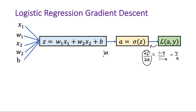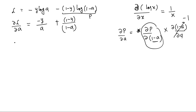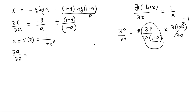Next, going backwards, we calculate del a over del z. We know that a is sigmoid of z, which expands to 1 over (1 plus e raised to the power minus z). Taking the complete denominator as some variable k and applying the chain rule — del a over del k times del k over del z — and using the fact that the derivative of 1/x is minus 1 over x squared, we differentiate with respect to (1 plus e to the minus z).